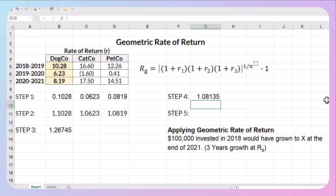So now I have everything inside my brackets but I have to remember to subtract my one. So here I'm going to say equals this which was the result of my formula minus one and that will give me my geometric rate of return.